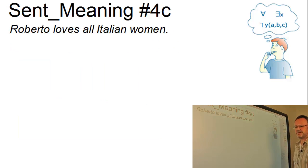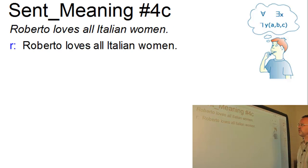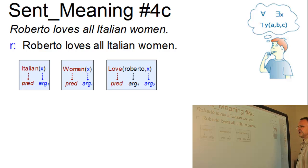Our last example is similar. The proposition, Roberto loves all Italian women, can be translated into three predications, where the last one involves a two-place predicate with one variable and one constant as its argument. So, love Roberto x, Roberto loves something.